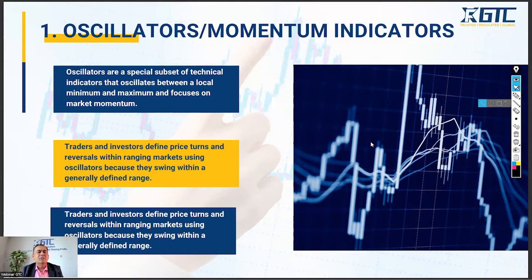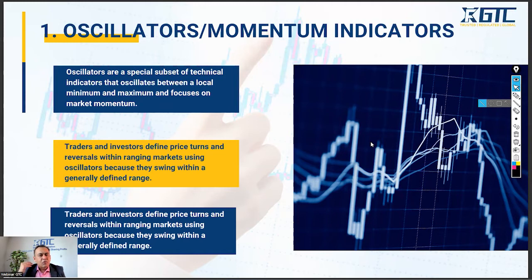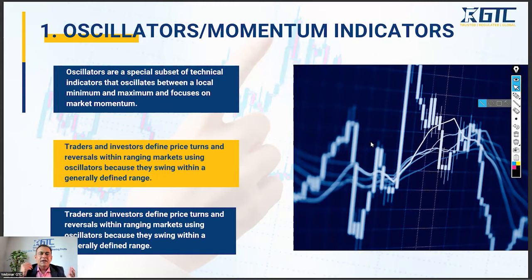Oscillators are also known as momentum indicators. Whenever we check the strength of the market, we first look for the direction — whether the market is going up or down. But as a trader, I should also notice the strength of the market, the strength in the trend. Let's say I'm going to buy in a bullish market, but it's been quite a while that the market has been bullish, and now the bullish trend might be on the verge of ending. We check the momentum of the market with these oscillators.